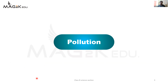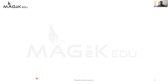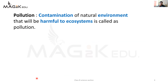जब भी हम यह वर्ड सुनते हैं तो हमारे दिमाग में अलग-अलग pictures सामने शुरू हो जाते हैं, जैसे कि कुछ लोगों के दिमाग में traffic आएगा जिसमें बहुत सी गाड़ियाँ और cars अपना horn बजा रहे हैं और carbon dioxide, carbon monoxide release हो रहा है, industrial waste, agriculture waste, solid waste - यह garbage वाली pollution. So let's talk about pollution in a little bit of detail. When you get back to the pollution - what is pollution? So pollution can be defined as contamination of natural environment that will be harmful to ecosystem.